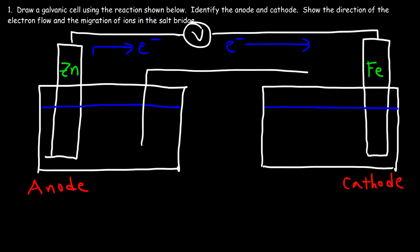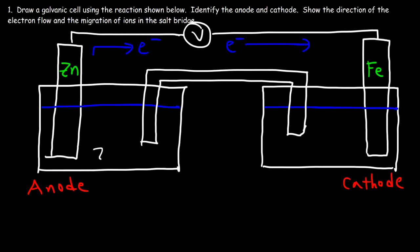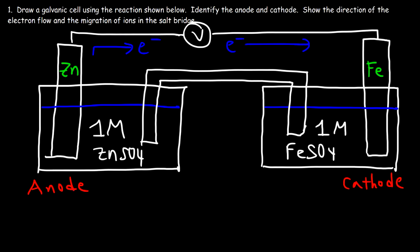Next we need a salt bridge. We need to identify the electrolytes in the solution. Since we have a zinc electrode, we use zinc sulfate as the electrolyte at a standard concentration of 1 M (one mole per liter). On the other side we have a 1 molar solution of iron sulfate. Oxidation occurs at the anode, so at the anode zinc loses two electrons.